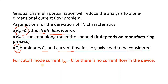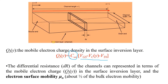Moving toward the derivation: in cut-off mode there is no current. For the linear mode, we look forward to calculate the drain current inside the channel. Drain current is nothing but charge per unit time, so we are looking for the charge in a particular area. The mobile electron charge is in the surface inversion layer, which forms when we apply potential on the gate.